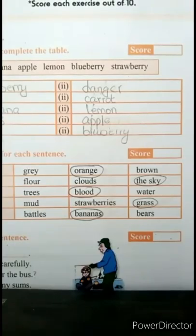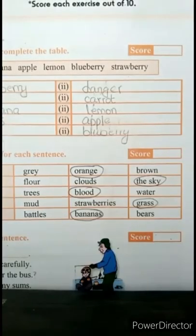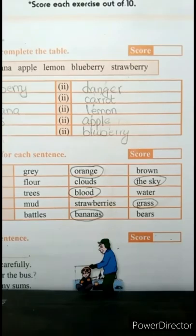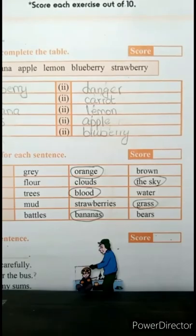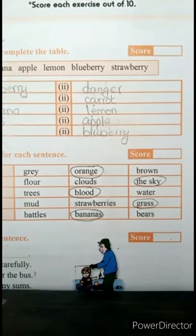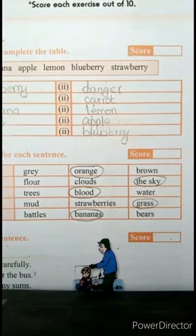Then number five is: yellow is the color of — battles, bananas, and bears. Battle means میدانِ جنگ, bears means جو جانور ہیں. So obviously we have bananas in yellow color, so you have to underline it.